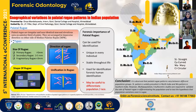Palatal rugae, as we all know, are irregular and non-identical elevations that we can find in the interior third of the palate on either side of the mid-palatine raphe.